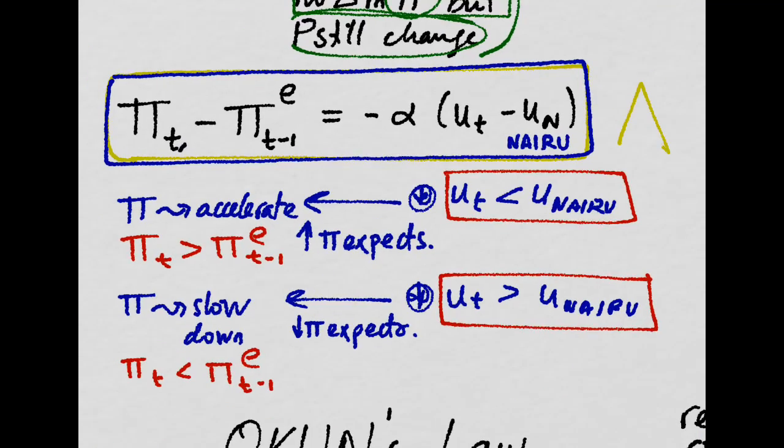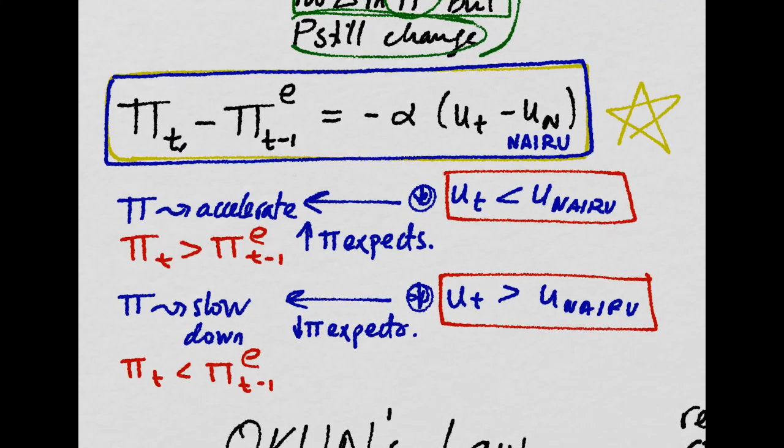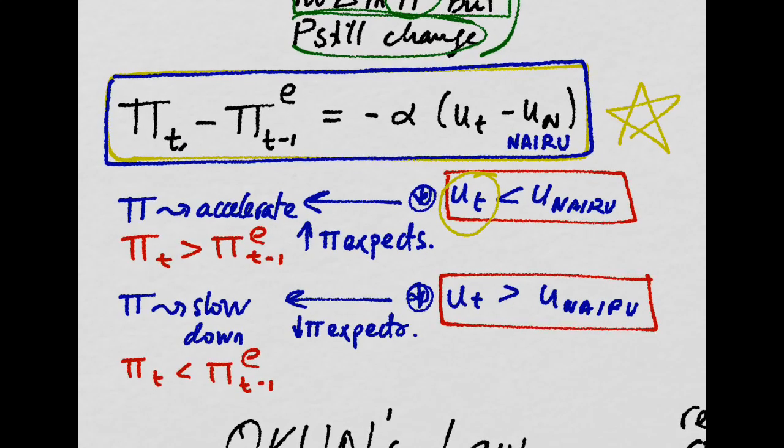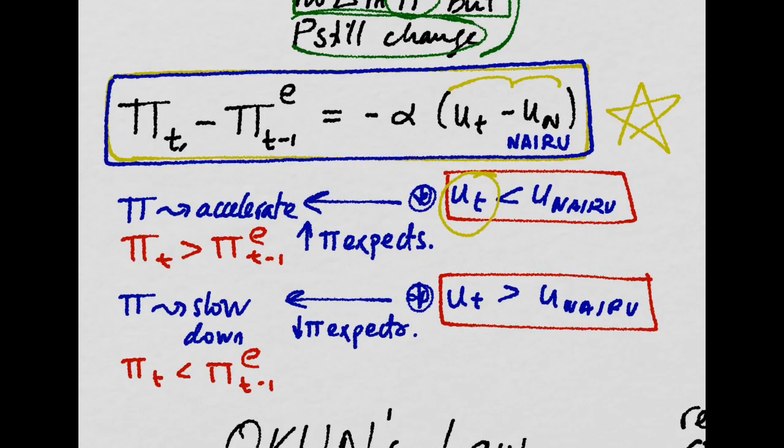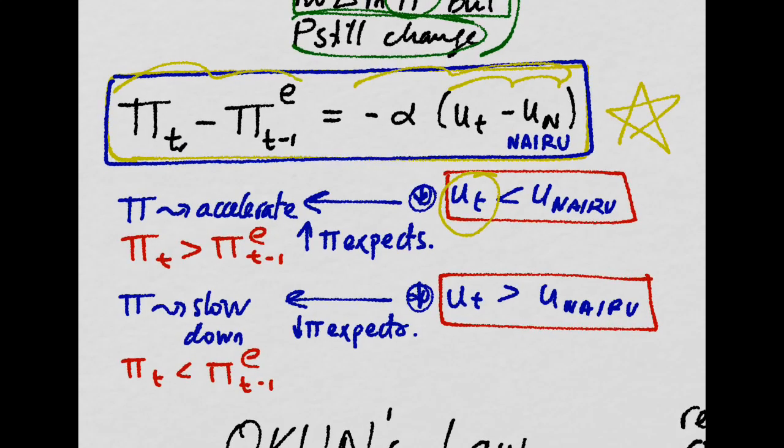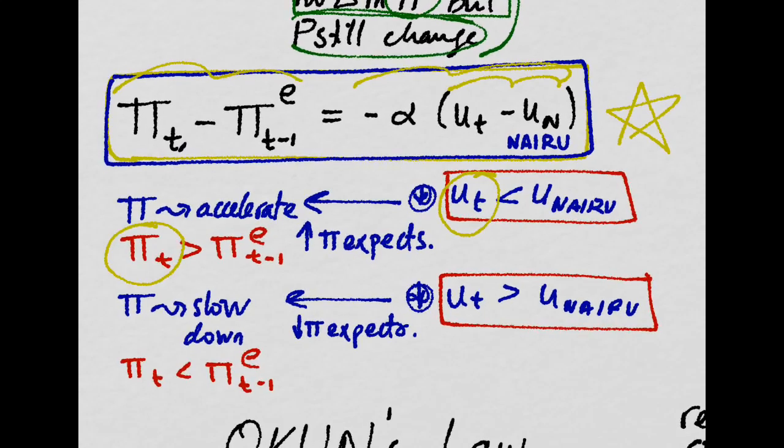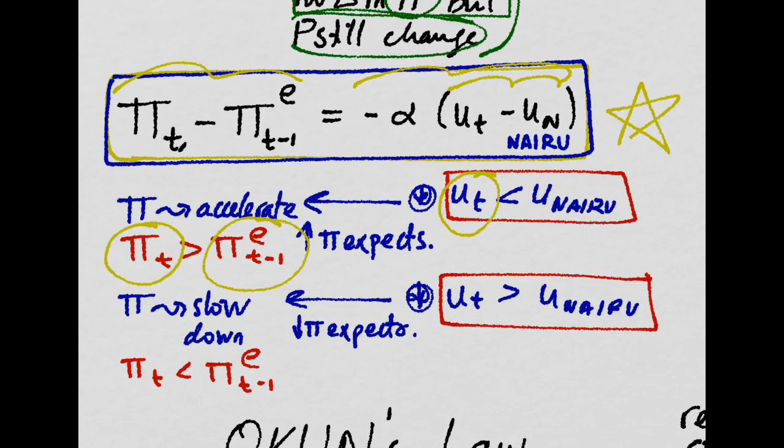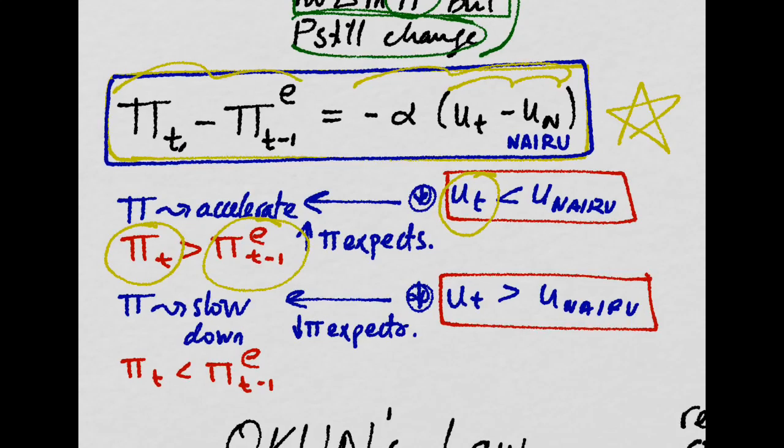So, this is the most important dynamic equation, which tells you that whenever your current unemployment rate is lower than NAIRU, then this is less than zero, so this is positive. So, the inflation has actually been higher than what you expected last year. So, inflation is actually accelerating.